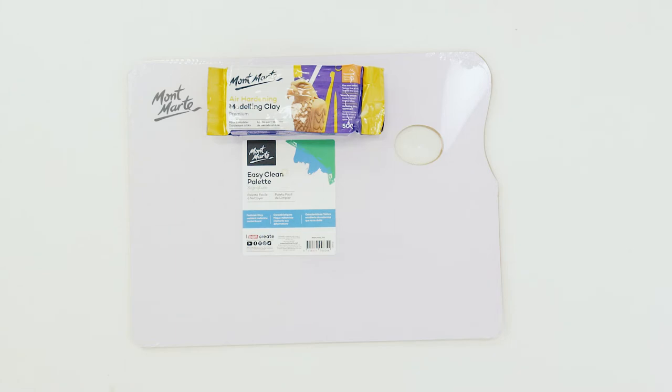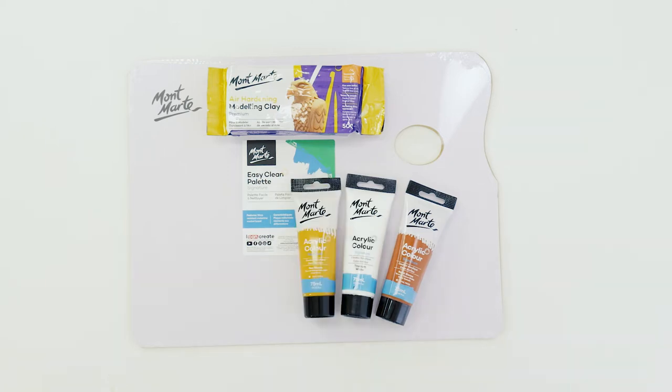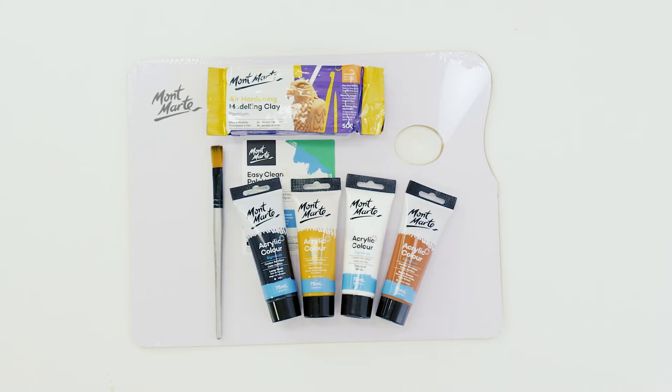To paint our hot cross bun we'll be using burnt sienna, titanium white, yellow ochre and lamp black all in acrylic colour. We'll be using a medium flat to paint the surface and a large palette knife to cut our clay.